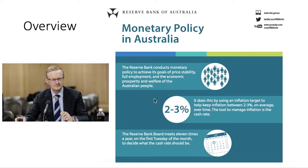This is a quick overview of monetary policy with our new governor, Philip Lowe. They conduct monetary policy to achieve their three goals. They do it by keeping inflation between two to three percent on average. The tool they have in the toolbox to manage inflation is the cash rate. They can't just grab a button and change inflation to two to three percent directly.